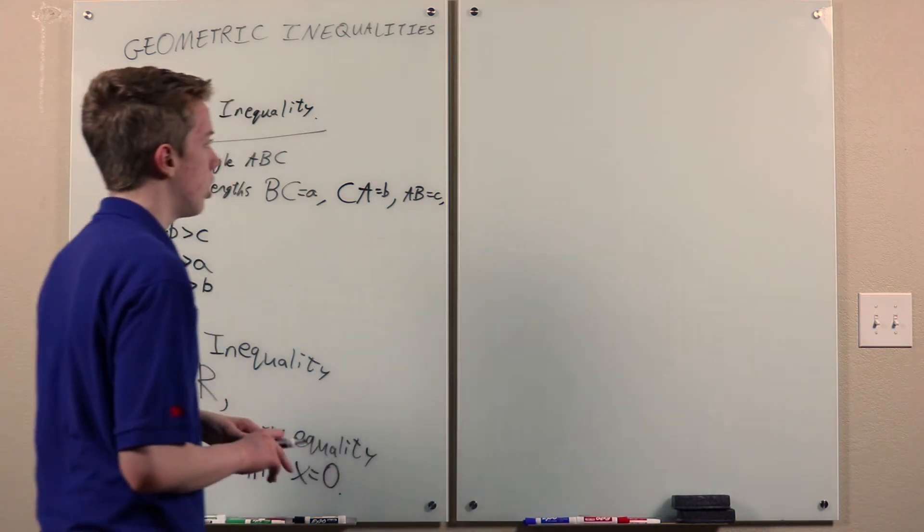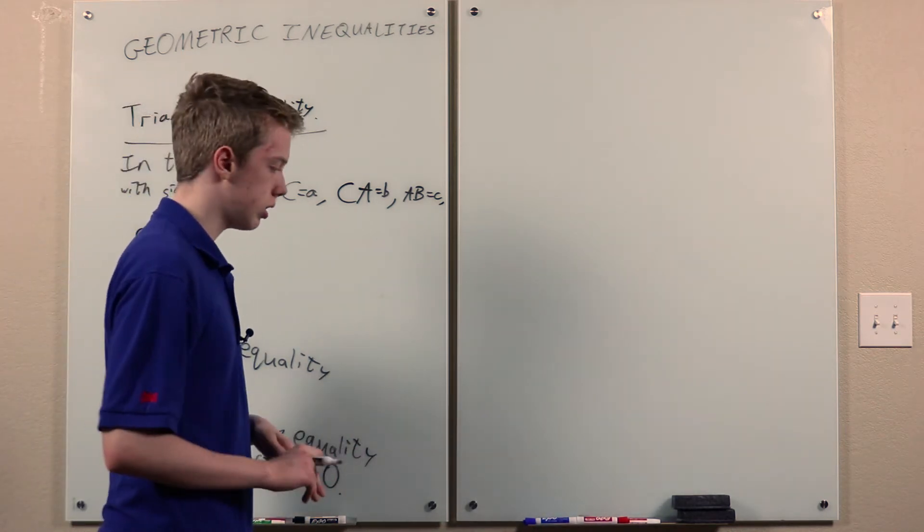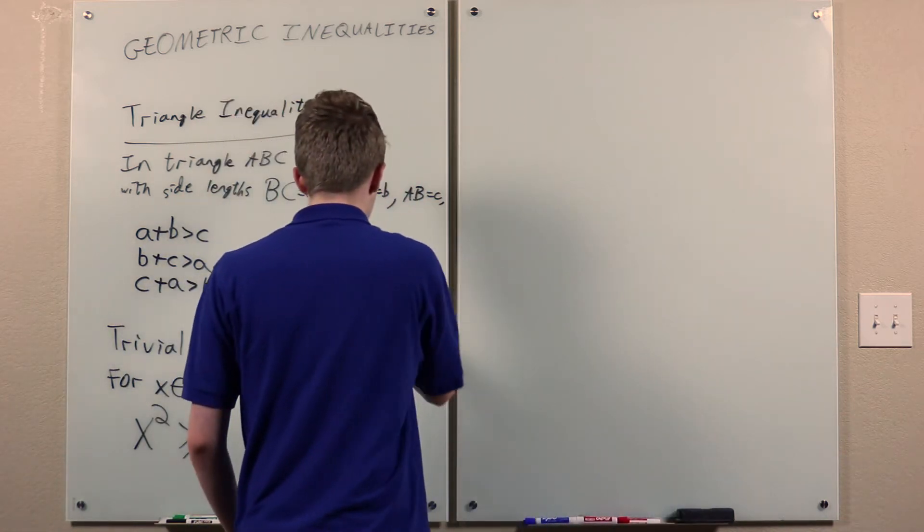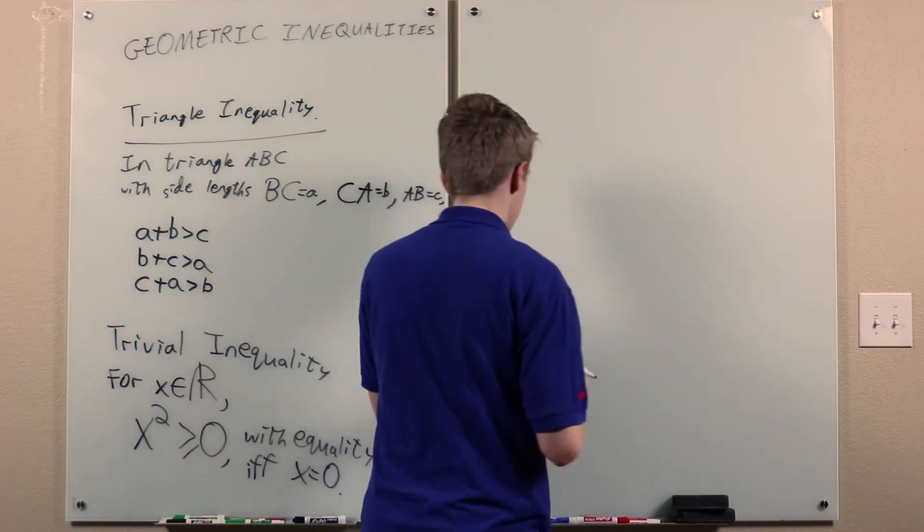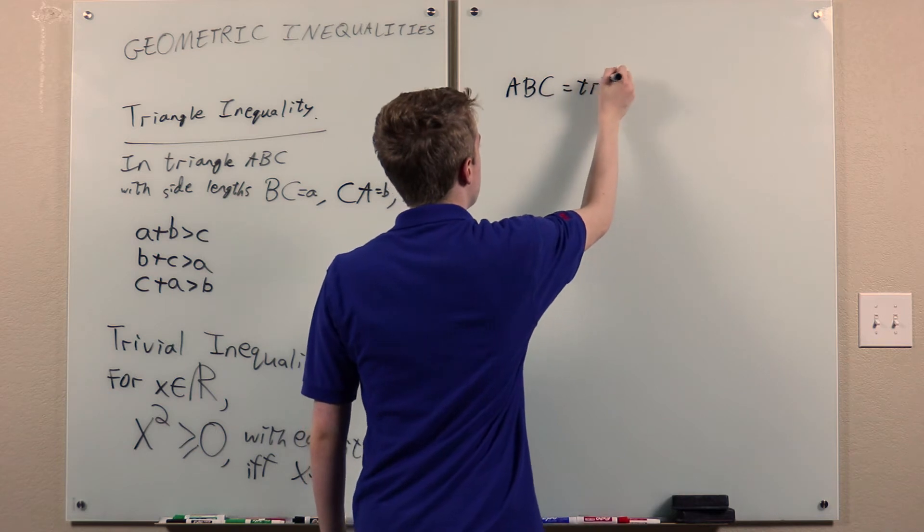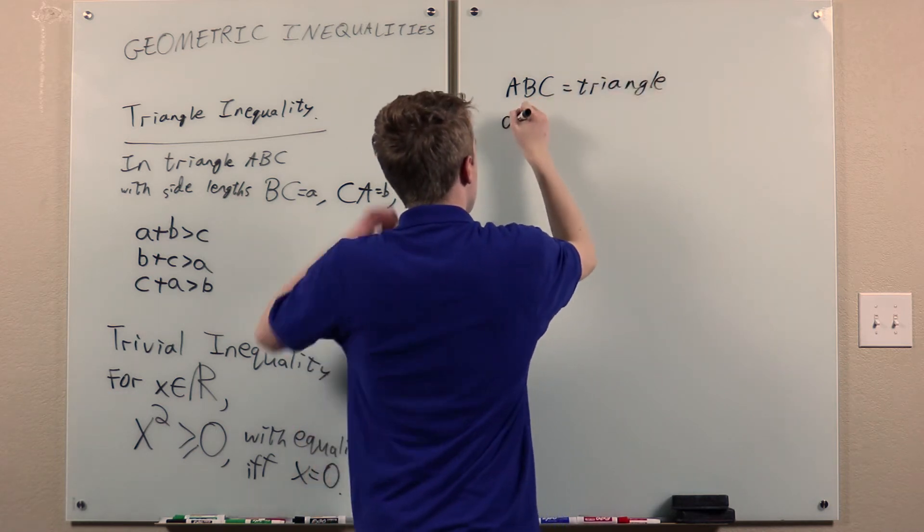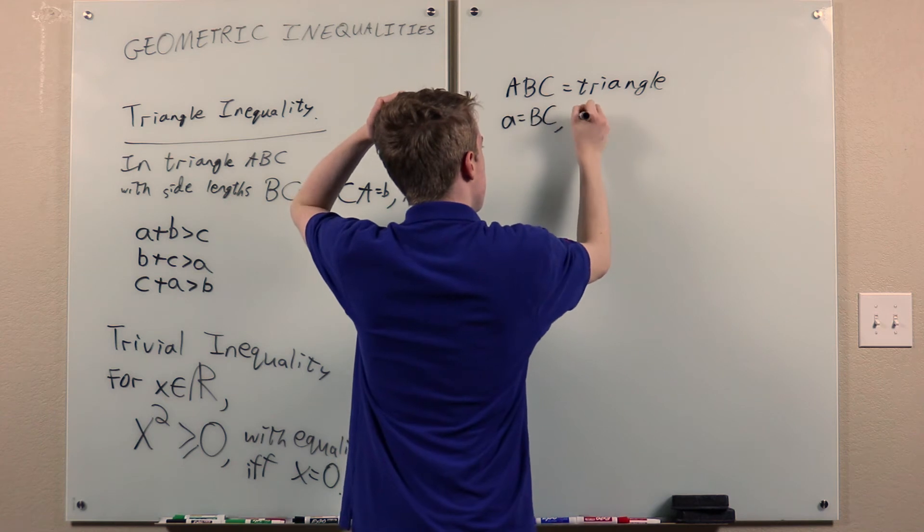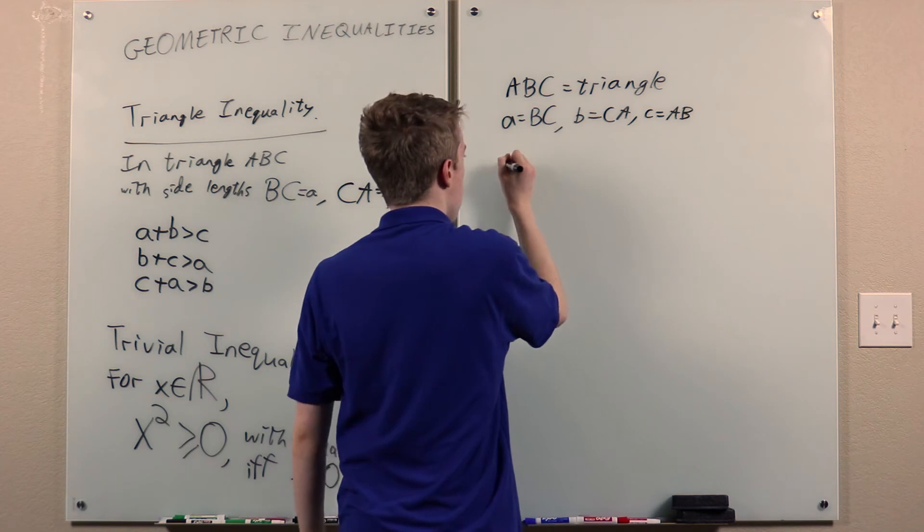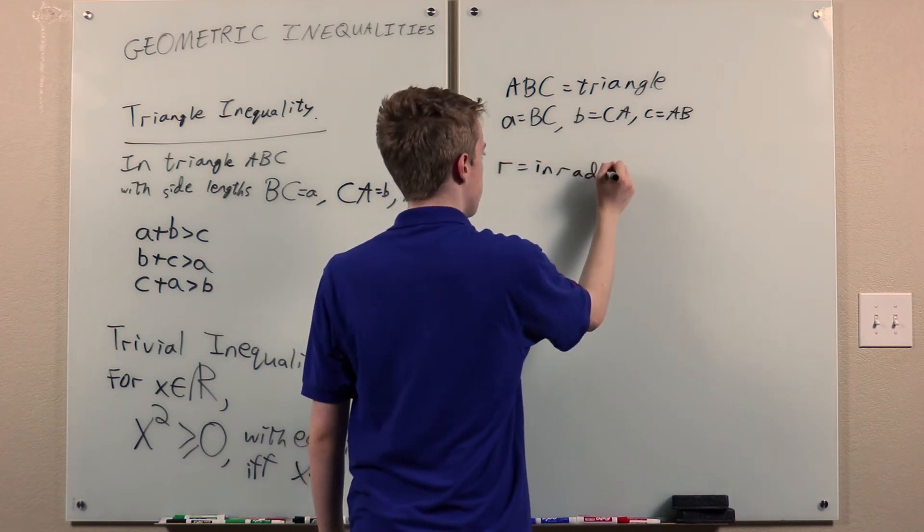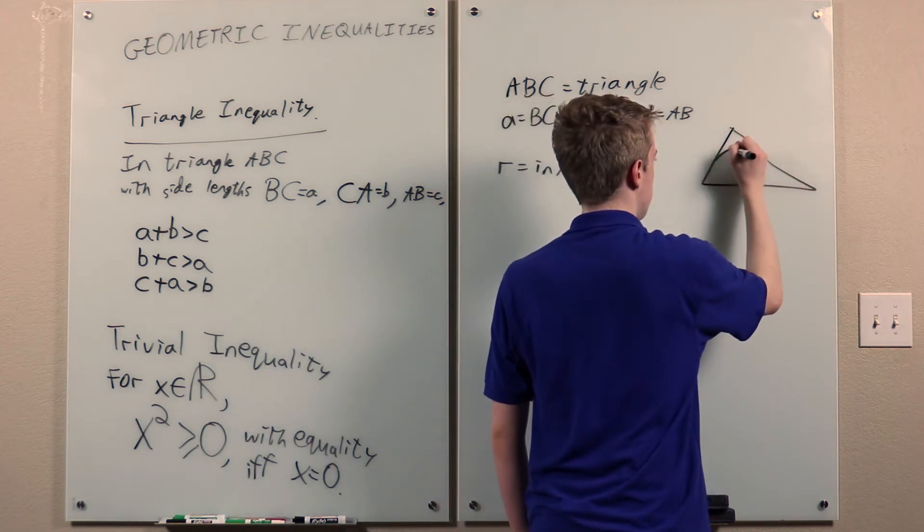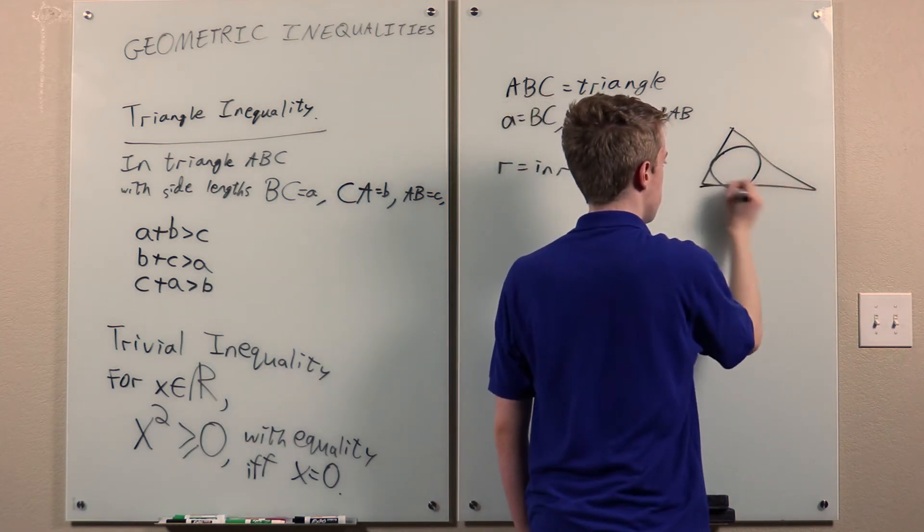Now, let's actually move on to something a little more interesting. There are several inequalities pertaining to just any arbitrary triangle. So, let ABC be a triangle. a, b, and c be the side lengths. Let r be the inradius, which is the radius of the inscribed circle tangent to all three sides.